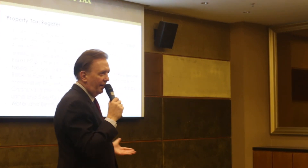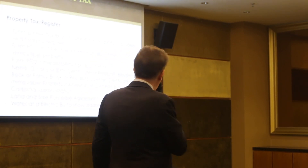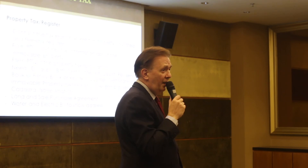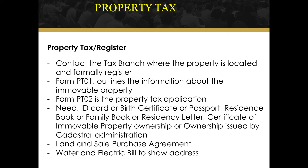So how do I register? If my property is over $25,000, what do I do? You go to your tax branch where the property is located and you register. There are two forms to be aware of: PT-01, which outlines the information about the property, and PT-02, which is the property tax application itself. You need to bring your ID card, birth certificate or passport, your residency book or family book or residency letter, certificate of immovable property ownership issued by the cadastral administration, your land sale purchase agreement from when you bought the property, and a water and electric bill if connected, to show proof of address.